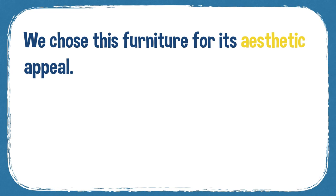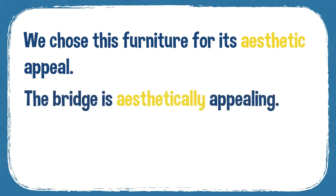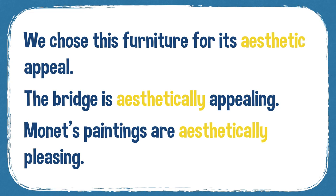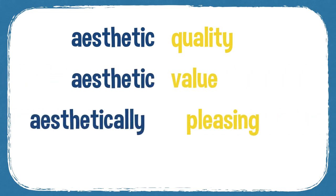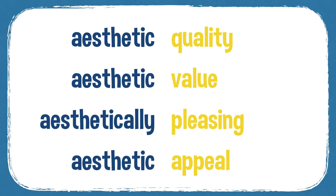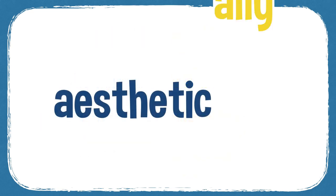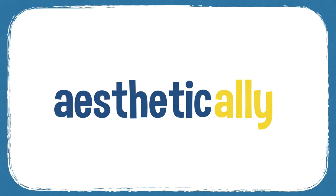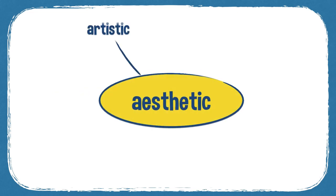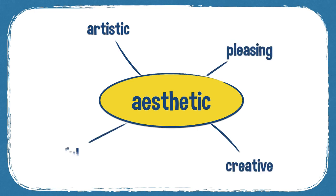Aesthetic also applies to housing and architecture. For example: 'We chose this furniture for its aesthetic appeal — it looked nice and went well with the painting.' 'The bridge is aesthetically appealing.' 'Monet's paintings are aesthetically pleasing.' We talk a lot about aesthetic quality, aesthetic value, and aesthetic appeal. Aesthetically is the adverb form. Some synonyms are artistic, creative, pleasing, and artful.